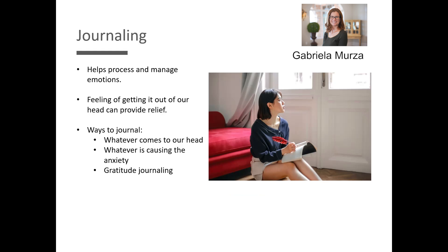Next, we have journaling. Journaling can be a powerful tool — being able to write your thoughts and feelings down helps us process and manage our emotions. Sometimes we have all this stuff bottled up in our heads and just need to get it out on paper. It can provide a sense of relief that it's not just stuck in our heads. There's no single greatest way to journal — it's like mindfulness in that it's what works for you, your personality, and what you're feeling in the moment. You could write about whatever comes to mind, about what's causing the anxiety, or do gratitude journaling where you talk about things you're grateful for.